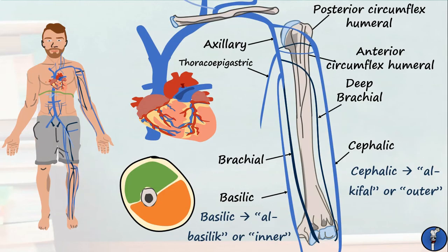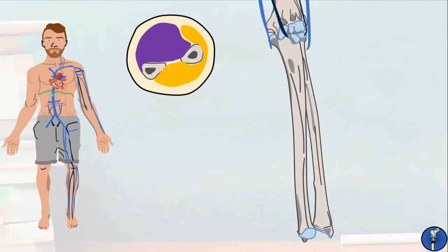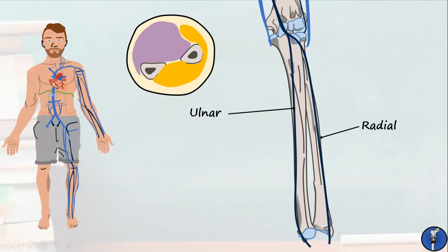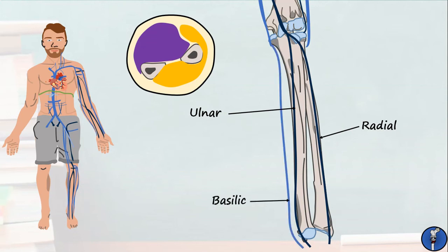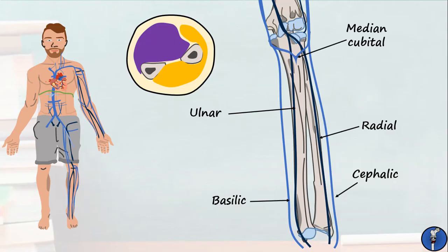Moving to the forearm, the brachial vein receives the venae comitantes from the ulnar and radial arteries which mostly drain the anterior and posterior compartments respectively. These veins originate in the deep and superficial palmar arches. Additionally, the basilic and cephalic veins continue down the arm, originating from the dorsum of the hand. At the crease of the elbow, the basilic and cephalic veins join together to form the median cubital vein, which itself receives blood from the median antebrachial. The median cubital vein is typically where you'll draw blood from when performing venipuncture.